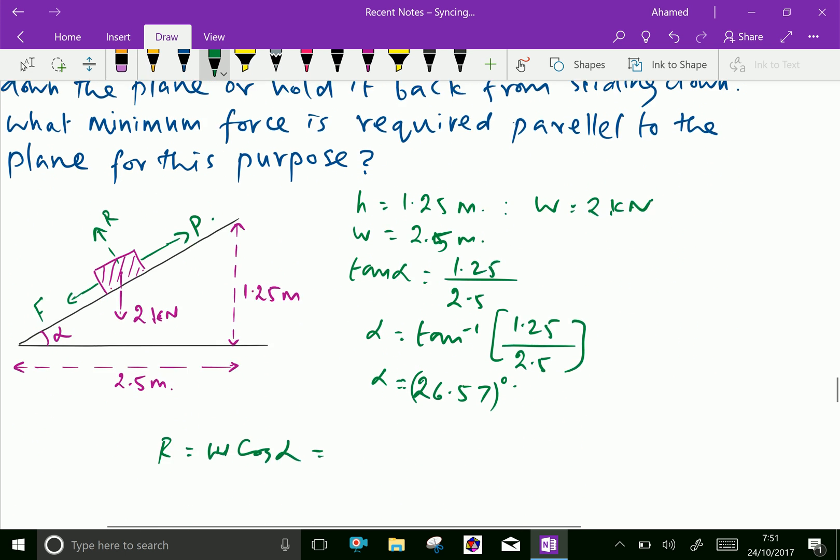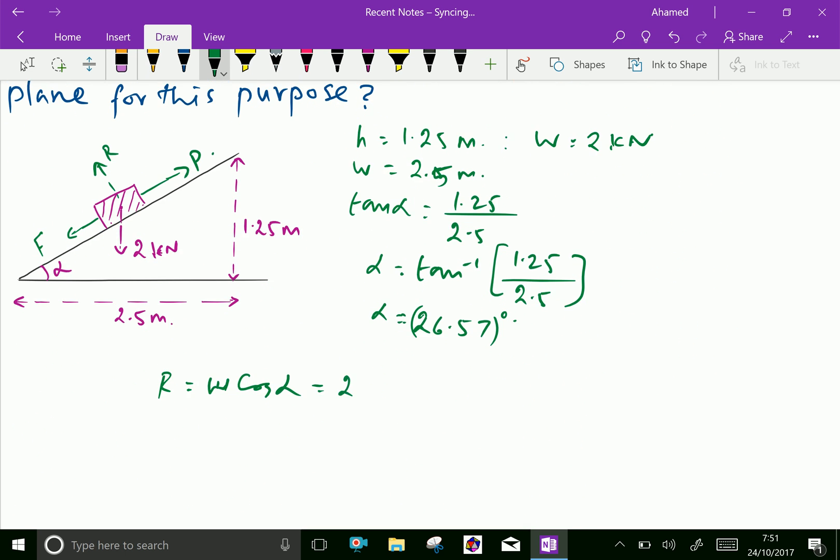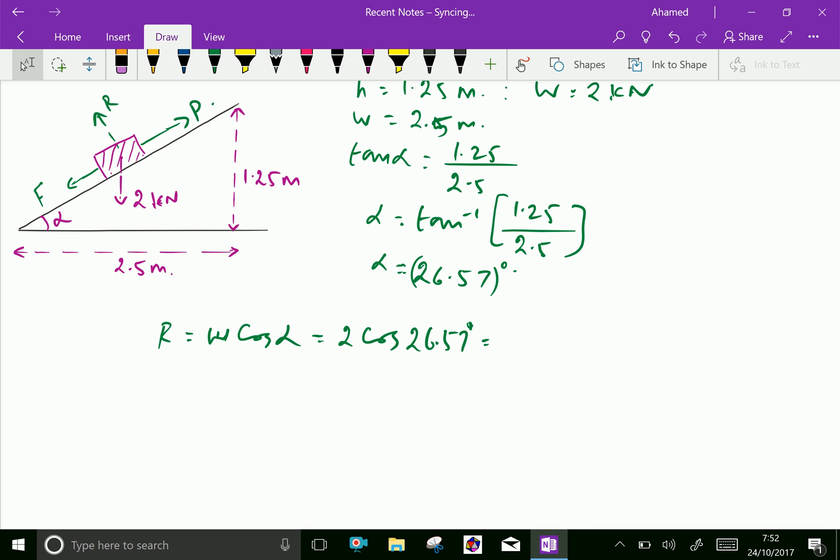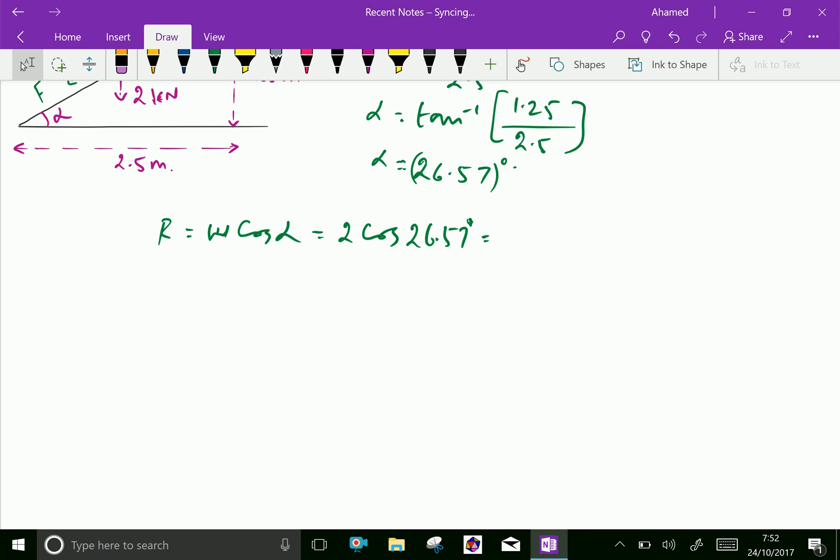Then 2 into cos of 26.57 degrees. Let us calculate this: 2 into cos of 26.57 equals 1.79 kilonewton.